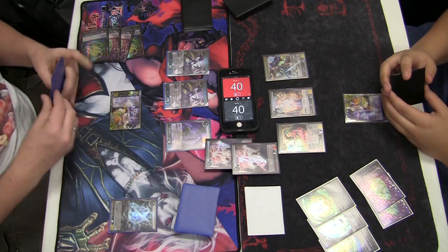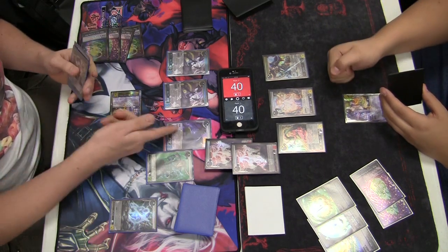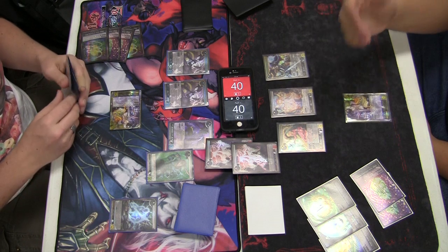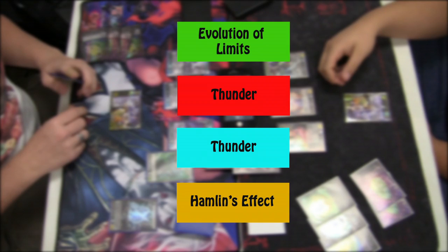I don't want my Hamelin to die right off the bat, so I'll respond to his card with a card known as Evolution of Limits. Nick can't play anything to respond to that, so we have to let things resolve.